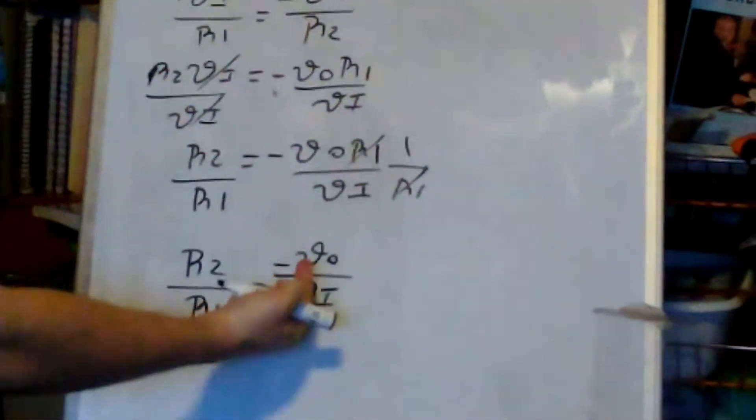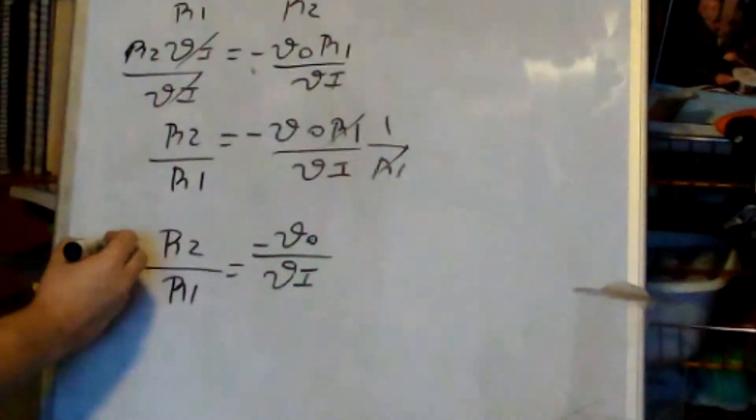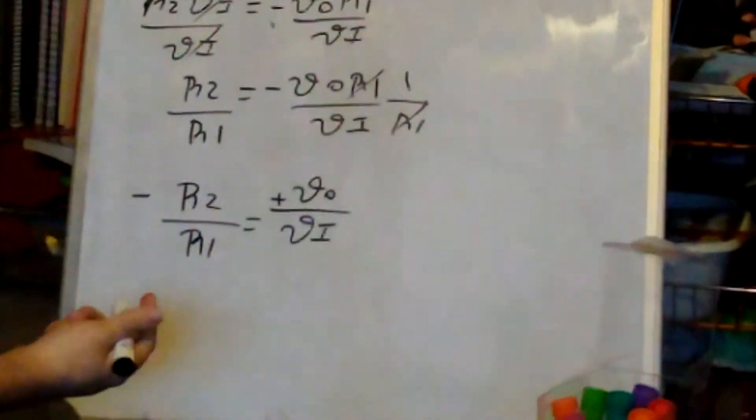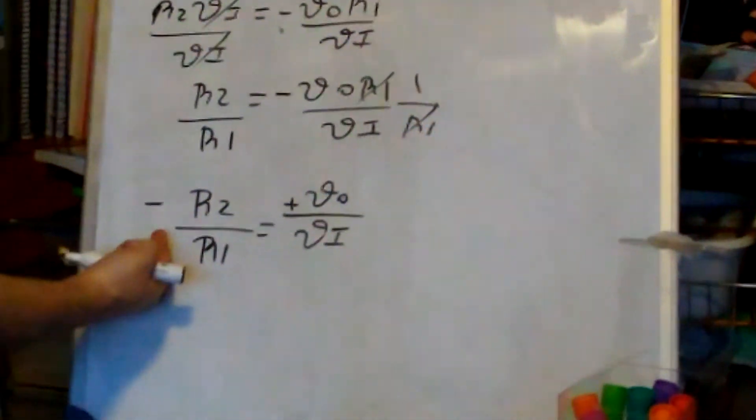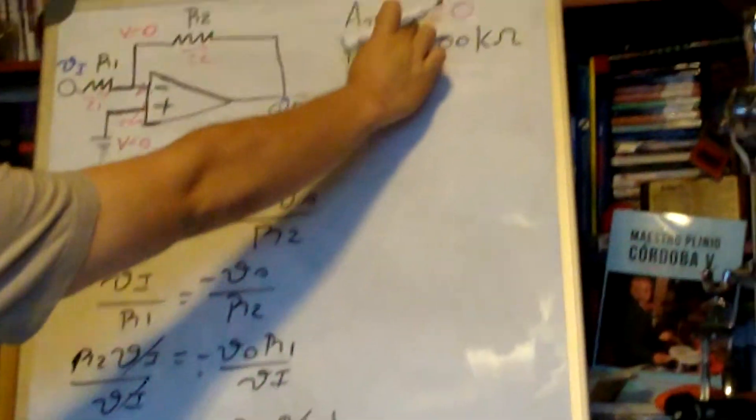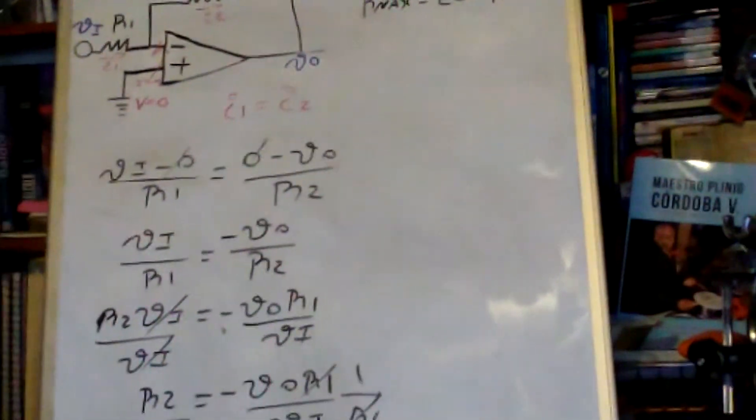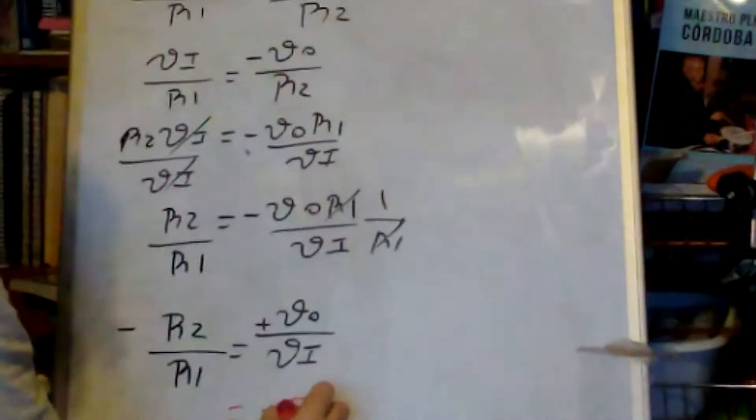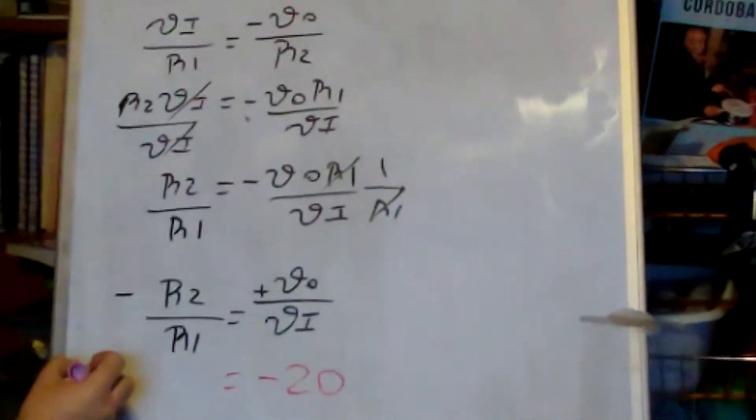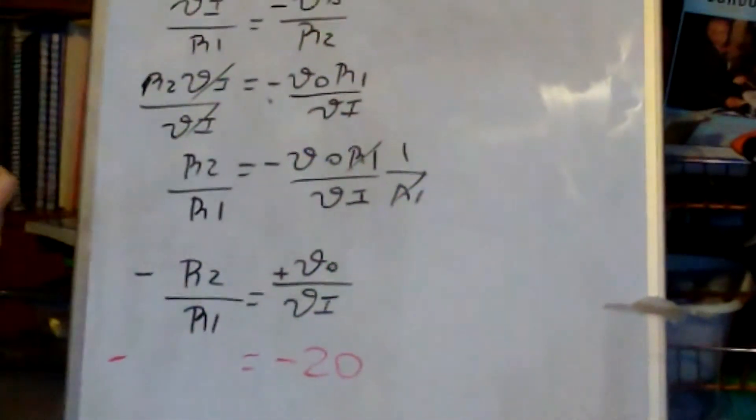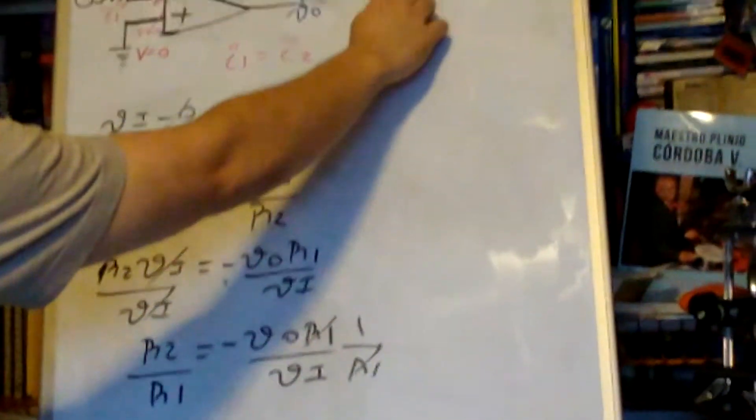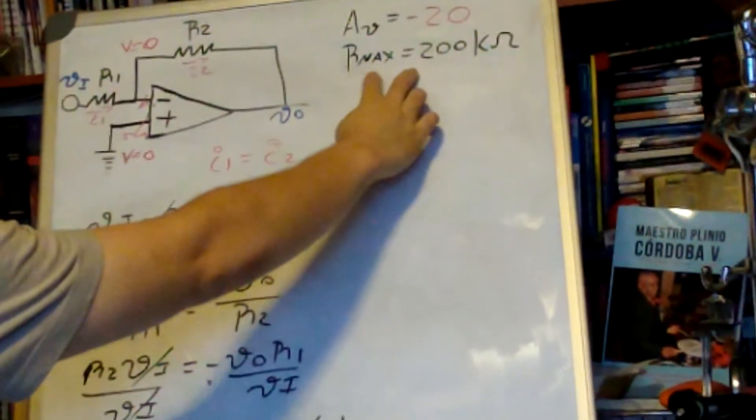I'm going to transfer the negative, multiply at both sides by negative. We know that the gain needs to be minus 20, so what I'm going to do is put minus 20 here, and I have a negative sign here. They say that Rmax is going to be 200 kilo ohms.